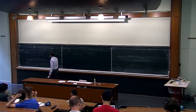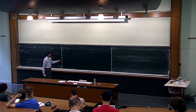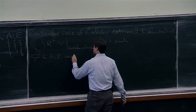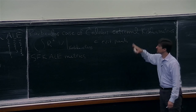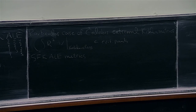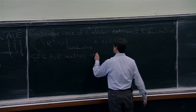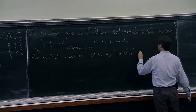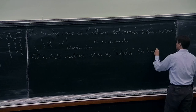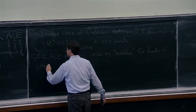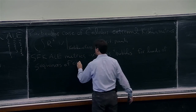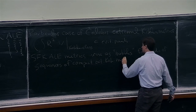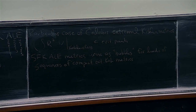These are very interesting on compact manifolds. SFK ALE metrics are important in the study of compact manifolds: even if you just want to understand smooth compact cases, you need these non-compact manifolds because they arise as bubbles — as limits of sequences of compact extremal Kähler metrics. I'm not going to get into any technical issues about bubbling, but the idea is as follows.